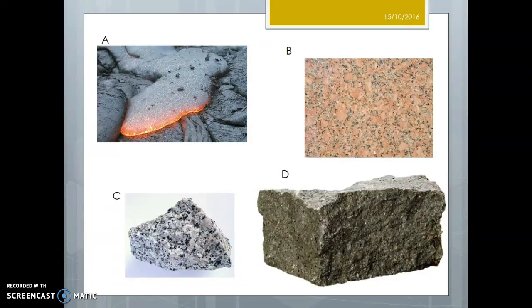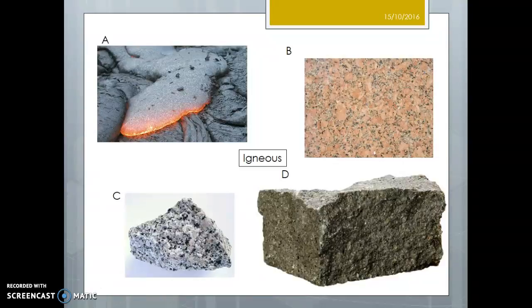Now we're looking at four different types of rock. A - we've got lava as liquid, this is basaltic lava so it will cool to basalt, and underneath the running lava you can see there's already some cooled basalt. B is a pink granite, C is a white granite, and D is basalt. These are all igneous rocks - they're igneous because they're formed from molten rock.